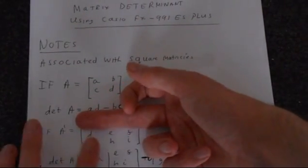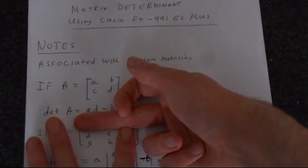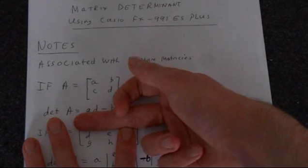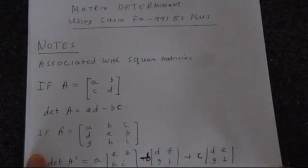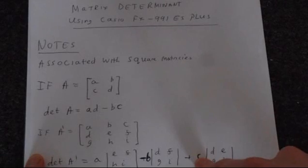So if we cover that column, we're intersecting at C, and we're left with D, E, G, H — which is what we've got here: D, E, G, H times C.